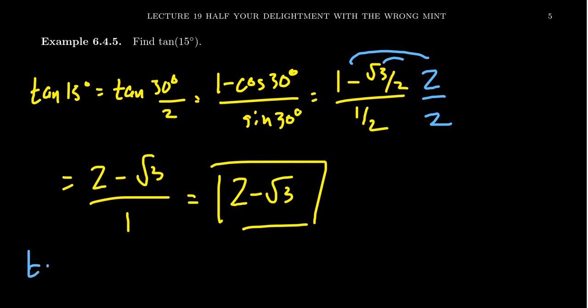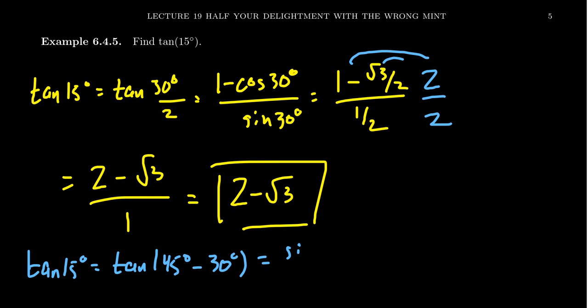Alternatively, we could calculate tangent of 15 degrees as tangent of 45 degrees minus 30 degrees using an angle difference identity. We've done this before — computing sine of 15 over cosine of 15, calculating each using angle difference identities from a previous video. We could also use half-angle identities for sine and cosine of 15, but the angle difference identities are much easier there. The half-angle identities for sine and cosine involve square roots, making them much more messy. For tangent, the half-angle identity just involves a cosine and sine, so it's fairly painless in comparison.